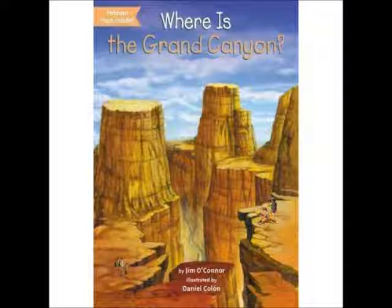Mesas and buttes: A mesa is a flat-topped hill or mountain with very steep sides. It is always wider than it is tall. The word mesa means table in Spanish. Buttes are smaller than mesas. They are taller than they are wide. Both mesas and buttes are found throughout the southwestern United States.